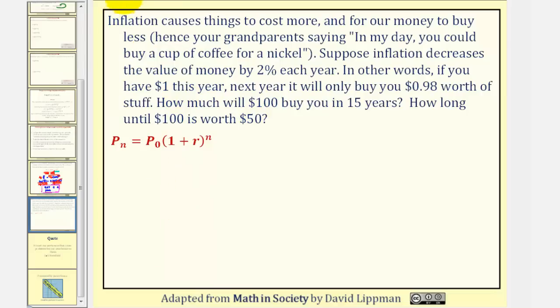Let's list the given information. The beginning amount is $100, and therefore P₀ is equal to 100. R, the rate of change, is decreasing 2% each year, and therefore r would be negative 2%, or as a decimal, that would be negative 0.02. And for the first part of the question, they're asking us how much $100 is worth in 15 years, and therefore n is equal to 15.